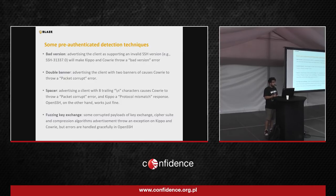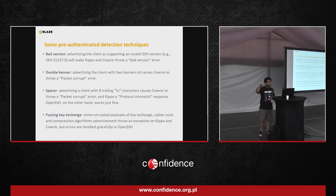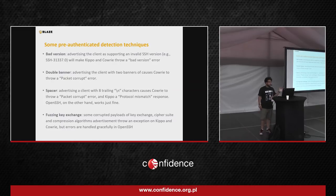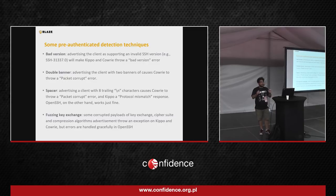There is also the double banner technique. When you send the banner twice — send the banner and then carriage return line feed the banner again — OpenSSH will just ignore the last banner and proceed with the key exchange. Whereas Cowrie and Kippo would throw a 'packet corrupt' error. Another way to detect it.